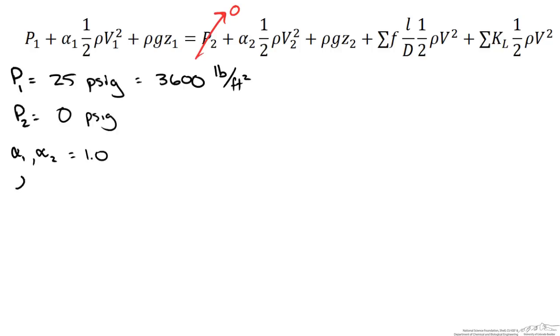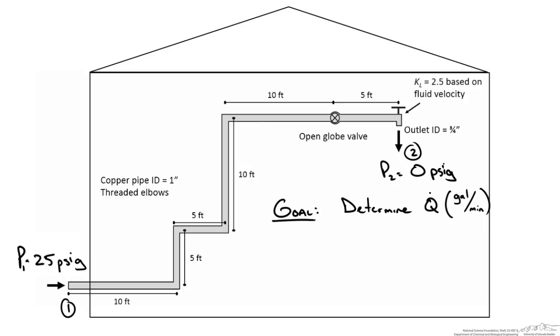We know our density. We do not know our velocity. We could use the gravitational constant and then we need to look at our elevation. If we look at our schematic we can say that z1, the elevation, is equal to 0. As we move up the system we go up 5 and 10 feet. So our elevation at z2 is going to be 15 feet.